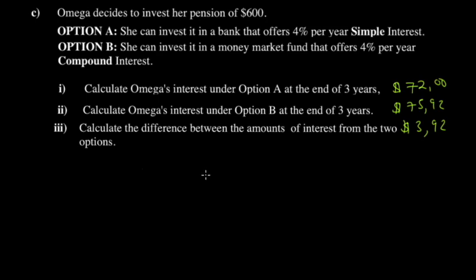That's it for this question. For option A it's simply principal times rate times time — that's how you get simple interest. For compound interest you have to calculate the cumulative amount first: principal times (100 + interest rate) to the power number of years, then remember to convert your percentage to a fraction. This was a very interesting question — I hope you got value from it. If you haven't subscribed yet, I advise you to. Catch you in the next video!